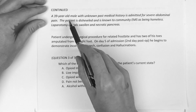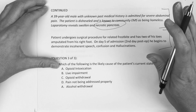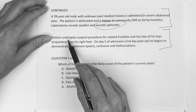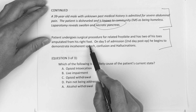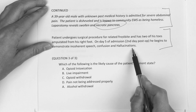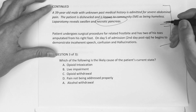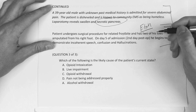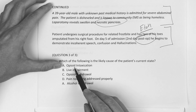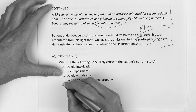Now the third question: same 39-year-old male with the necrotic pancreas. He undergoes a surgical procedure for related frostbite - the guy was homeless during wintertime, a very popular exam scenario - and has two toes amputated on his right foot. On day five of admission, which is the second day post-op, he begins to demonstrate incoherent speech, confusion, and hallucinations. Which of the following is the likely cause of the patient's current state?